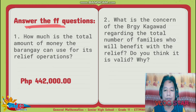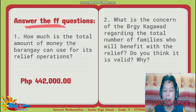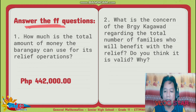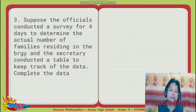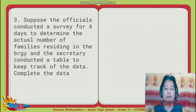The 850 given earlier was just an approximation. It is valid because if we get the actual number of beneficiaries, we can exactly divide the budget accordingly. Question number 3: suppose the officials conducted a survey for 4 days to determine the actual number of families residing in the barangay, and the secretary created a table to record the data. Complete the table.